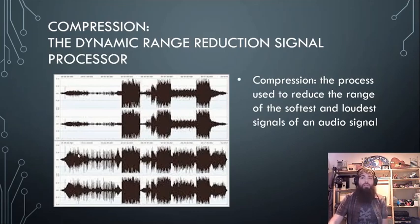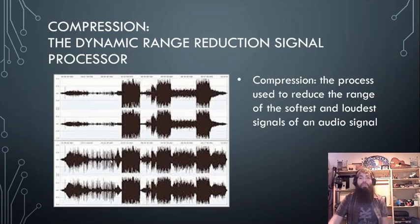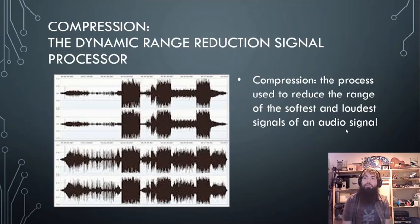It's going to make the soft parts louder, maybe make the louder parts quieter, reducing them so they have a lower dynamic range. Compression is the process used to reduce the range of the softest and loudest signals of an audio signal.